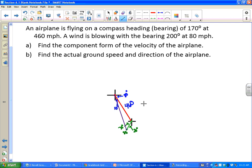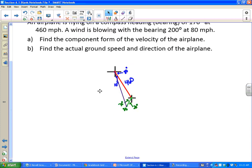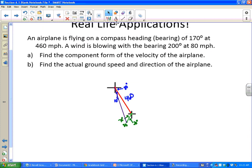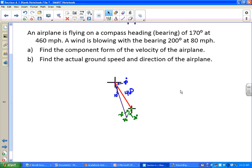What we're going to do is figure out the direction angle and the speed of that, but let's start with part A: find the component form of the velocity of the airplane. We're going to say the magnitude is 460 times cosine of the direction angle.